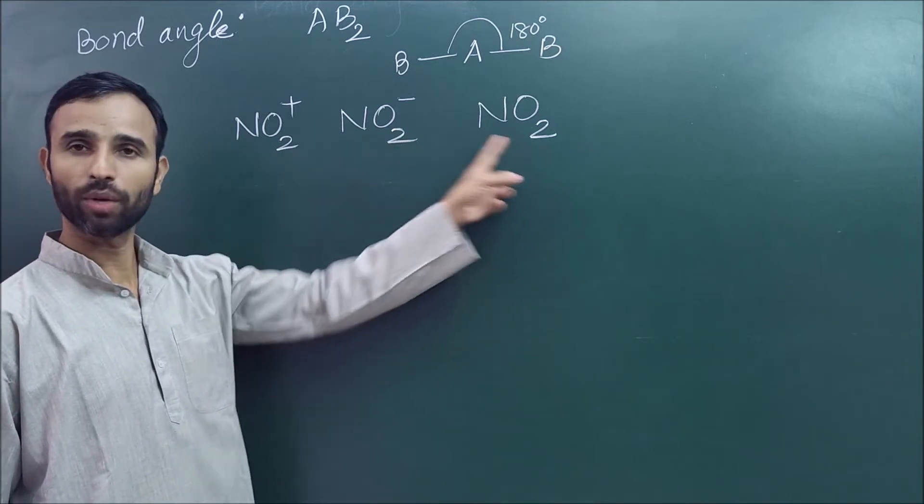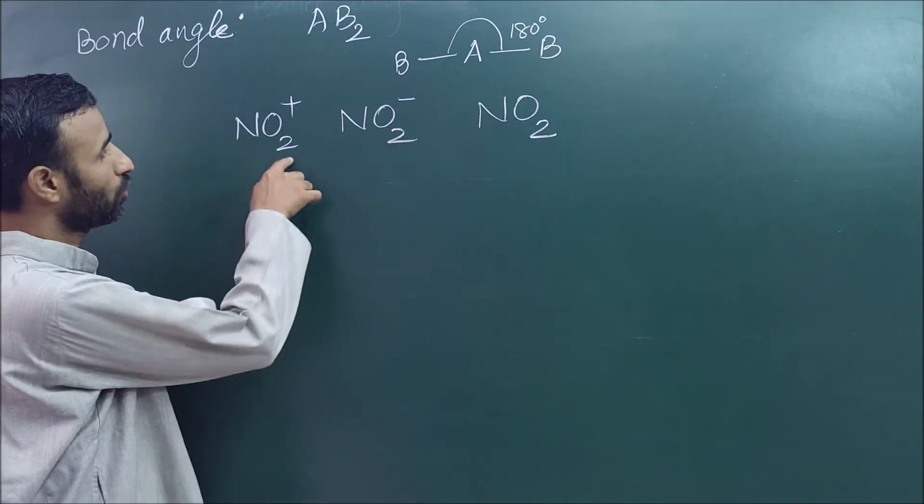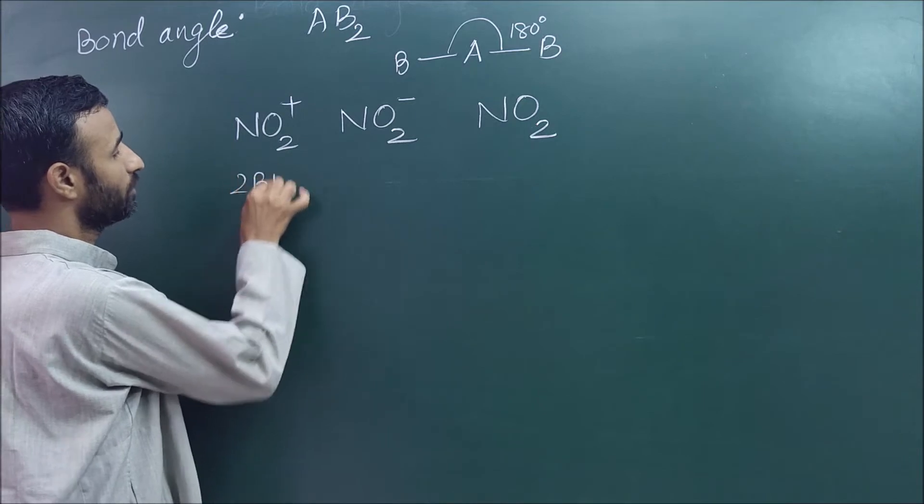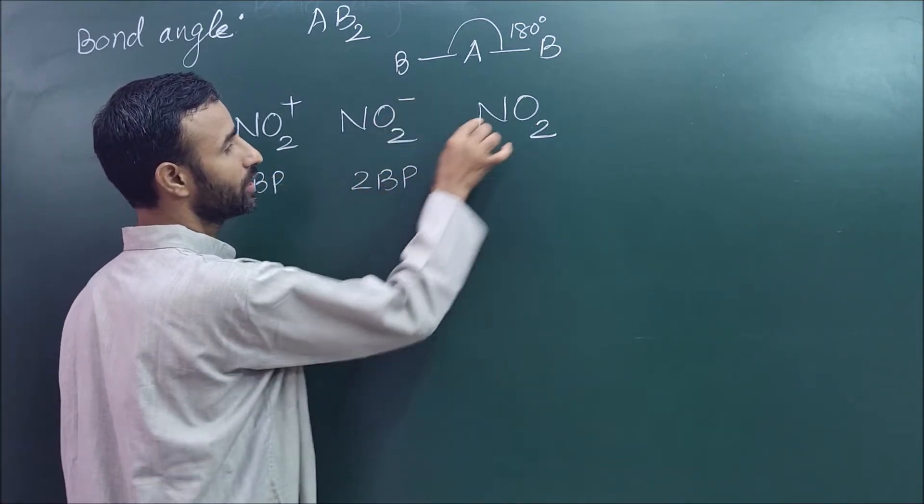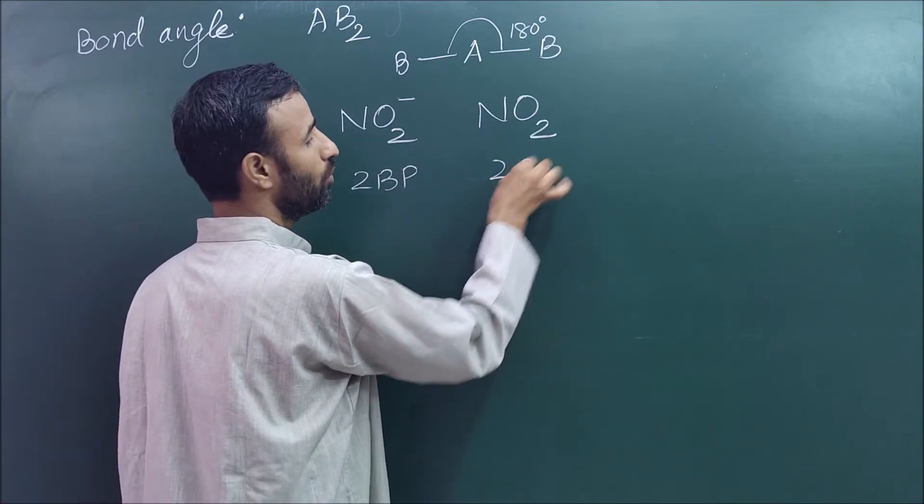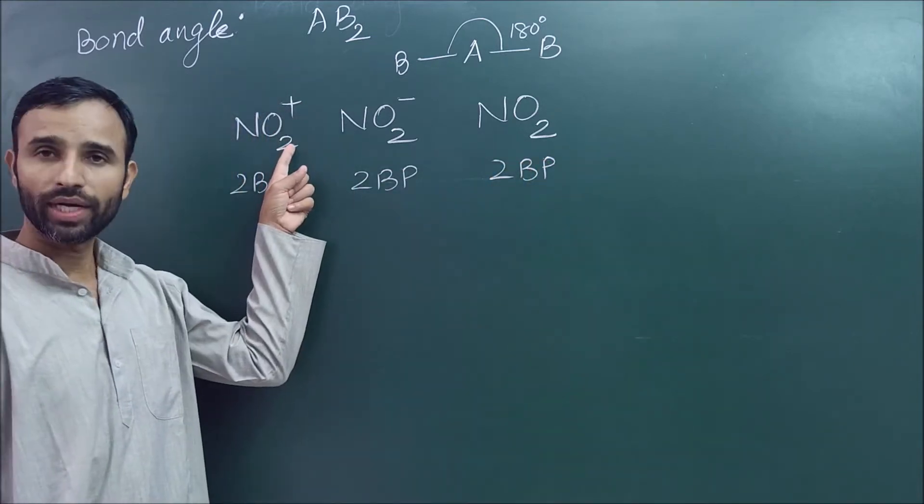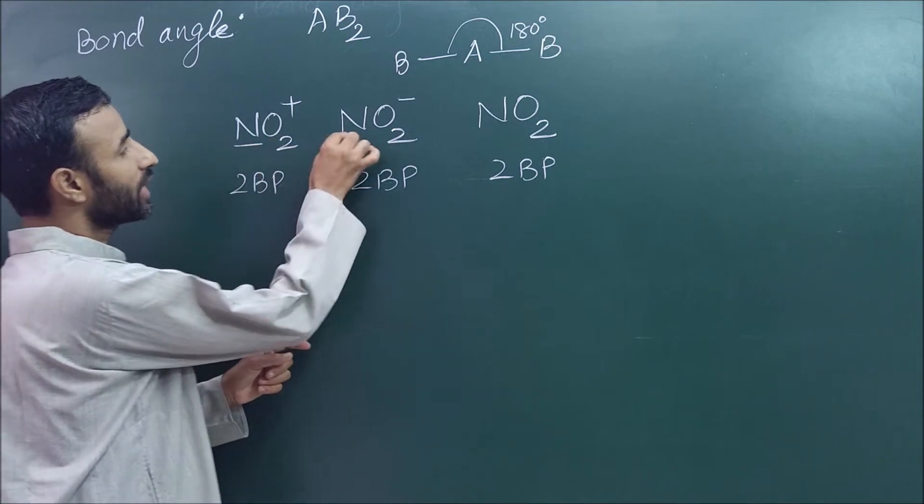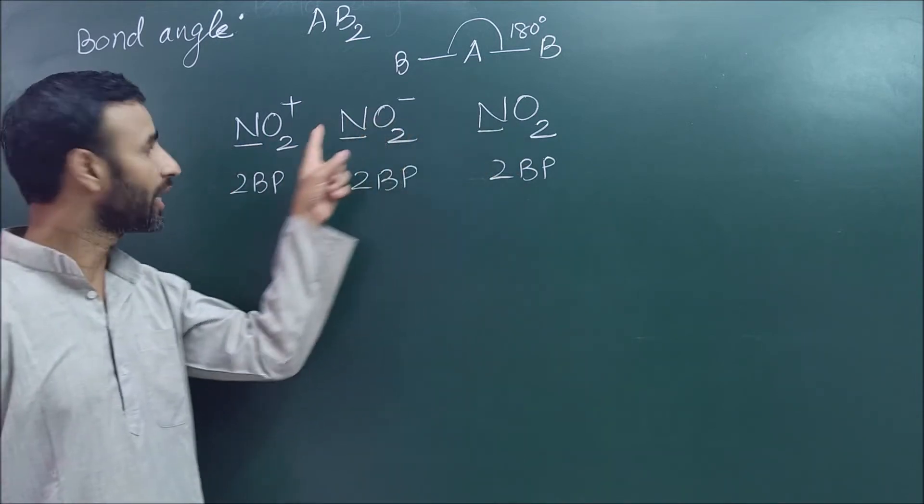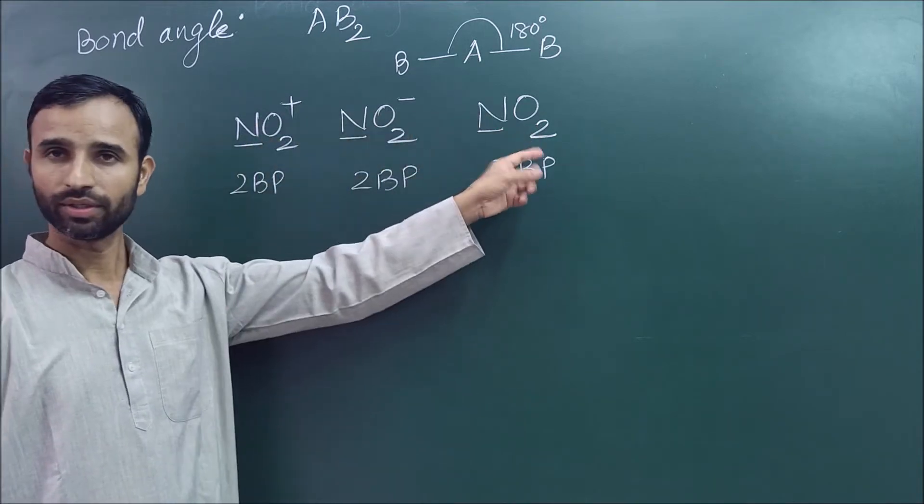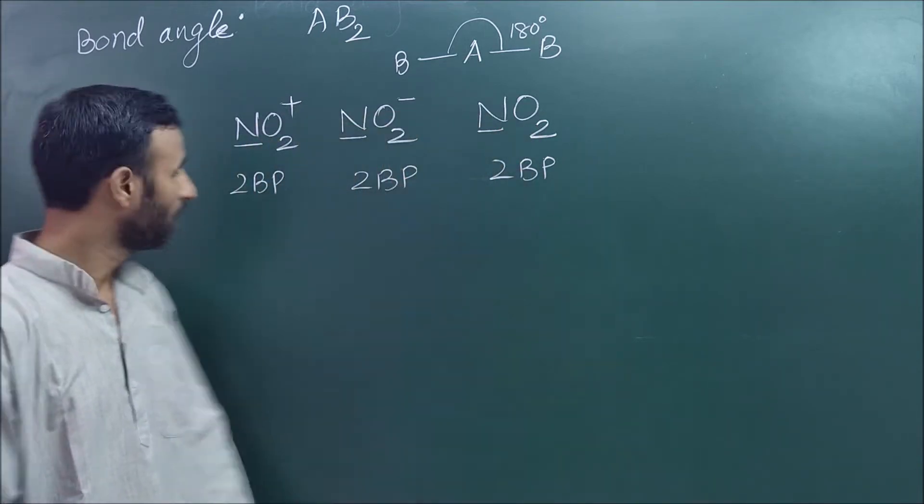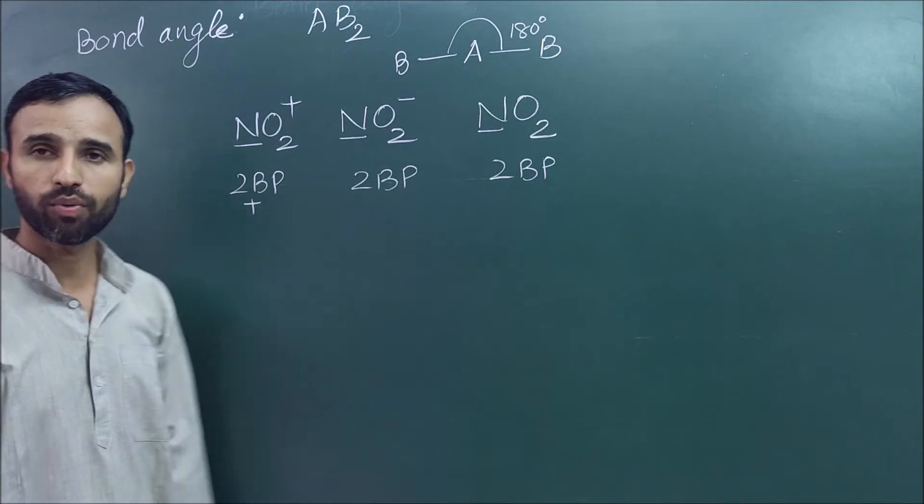First we have to calculate bond pairs. In NO2 positive there are two bond pairs, NO2 negative again two bond pairs, NO2 two bond pairs. Bond pairs we can calculate: how many atoms are attached to the central atom? There are two oxygens on each, that's why there are two bond pairs, plus number of lone pairs.